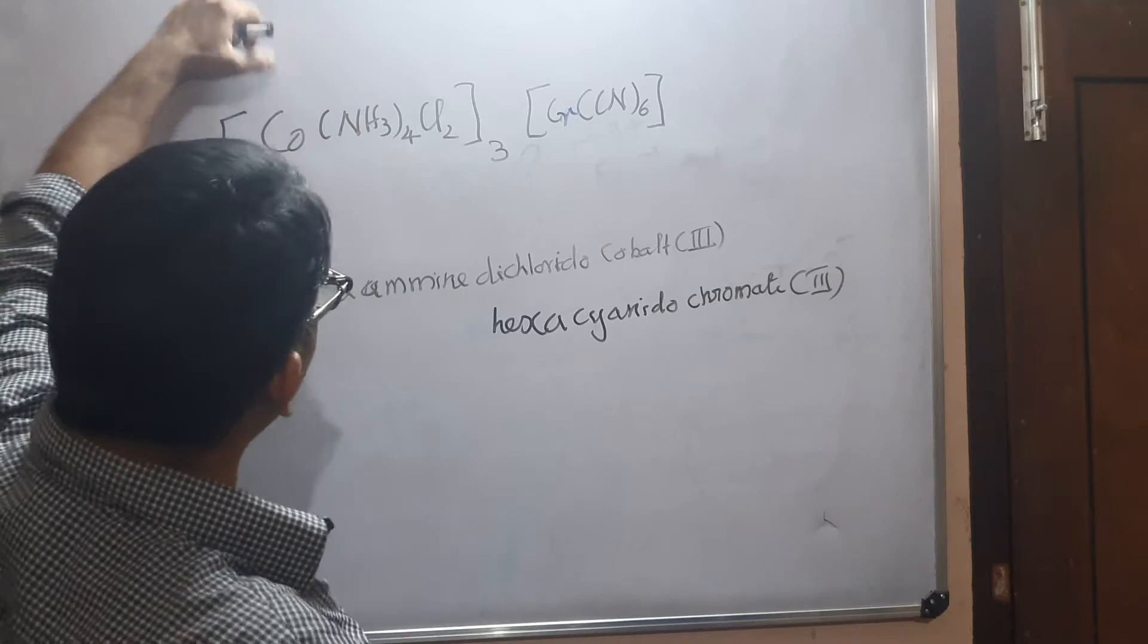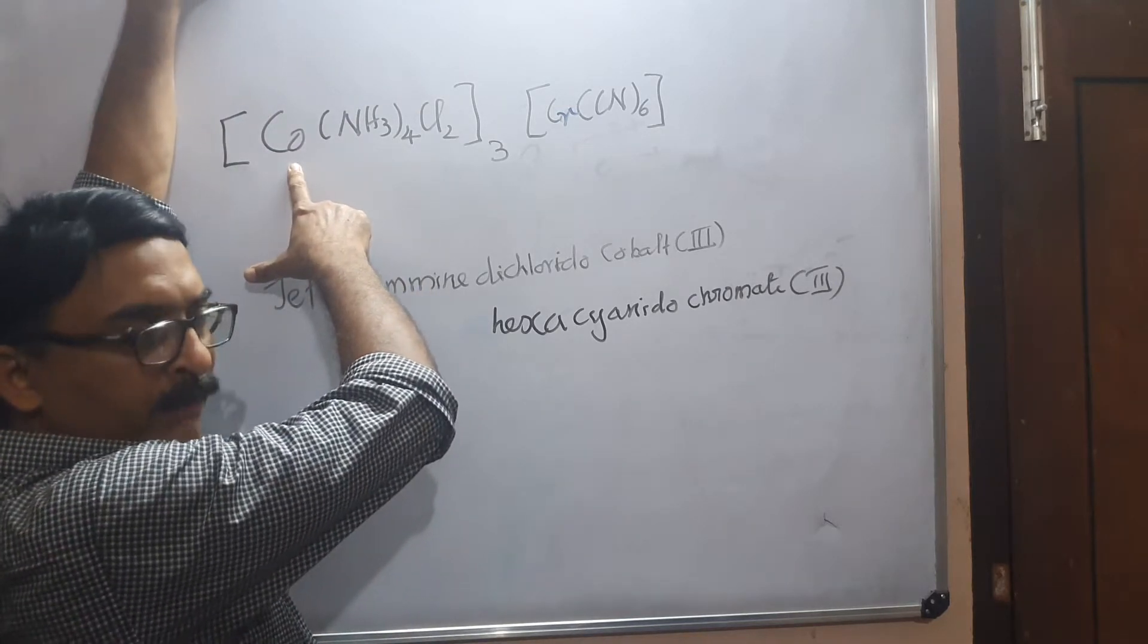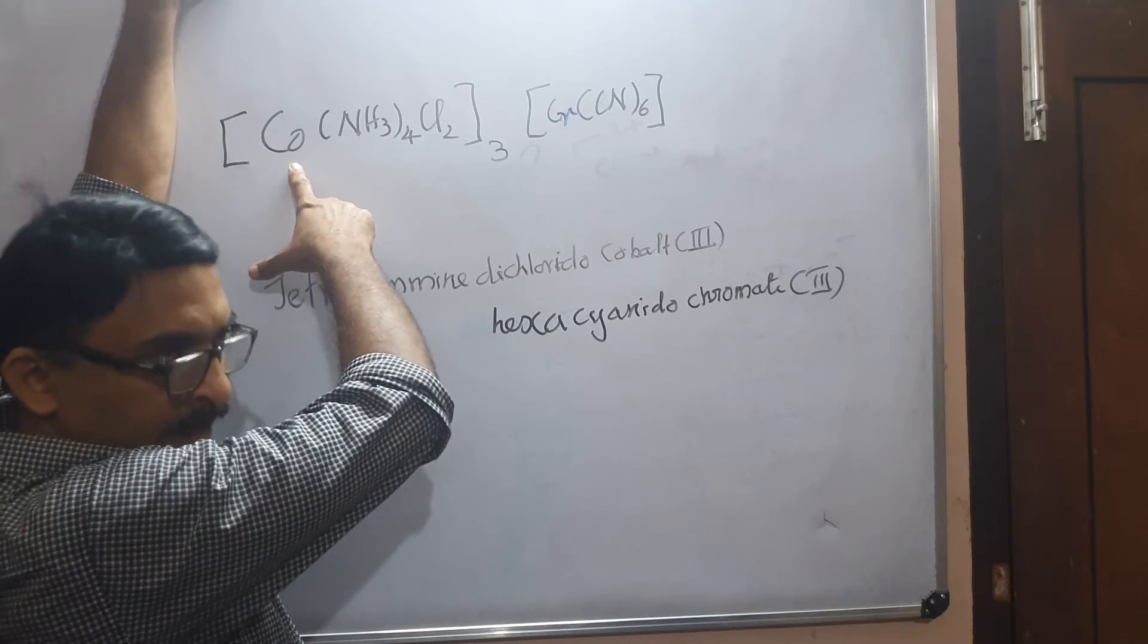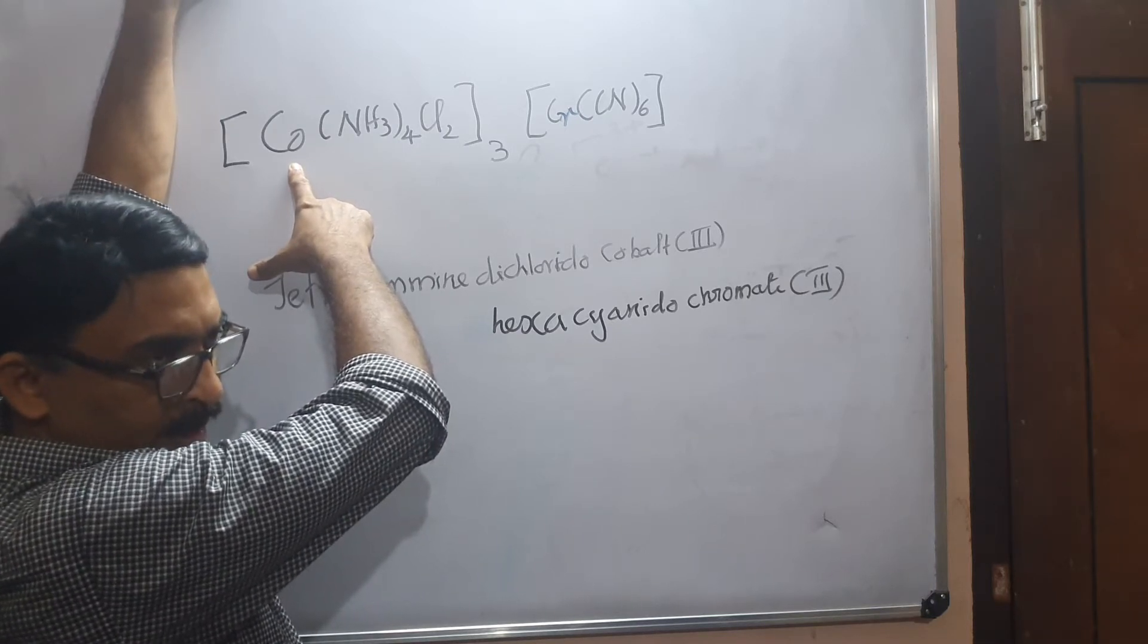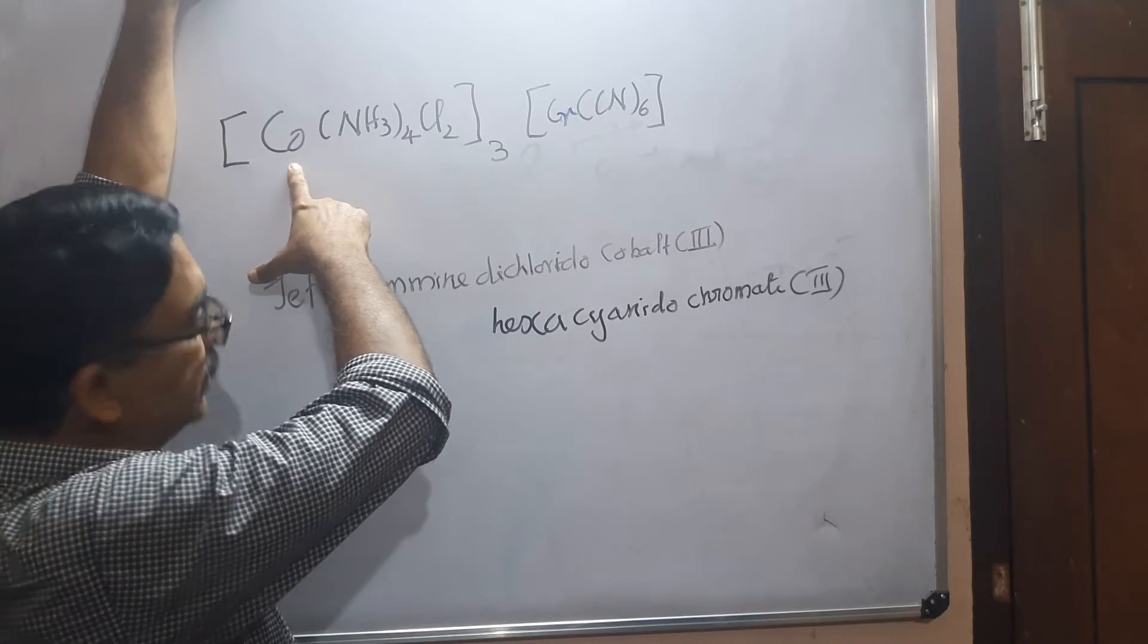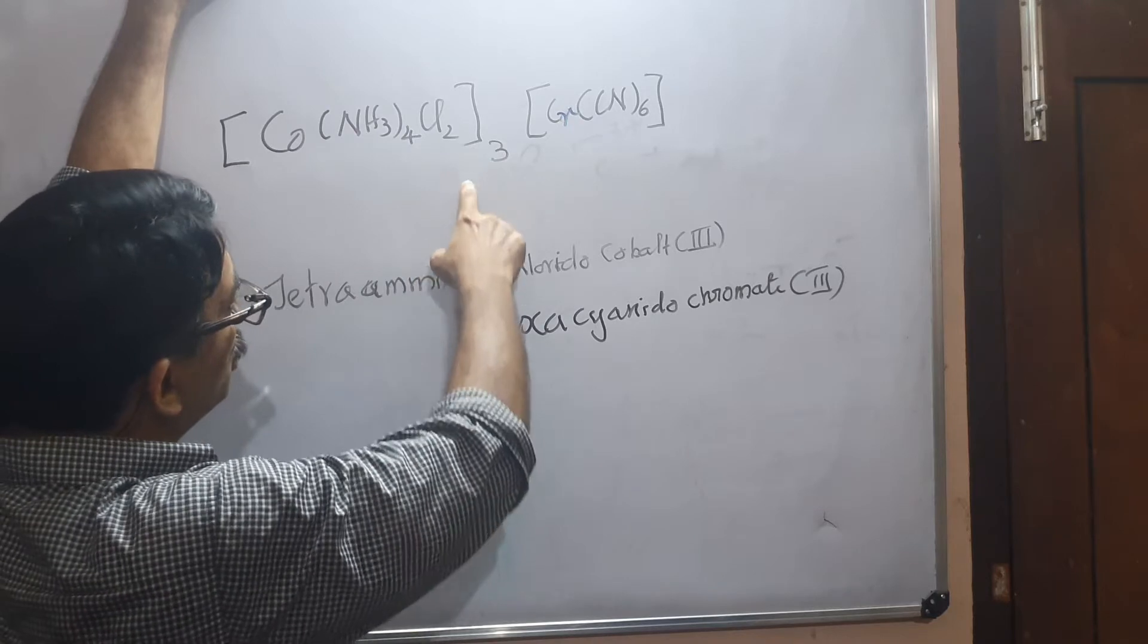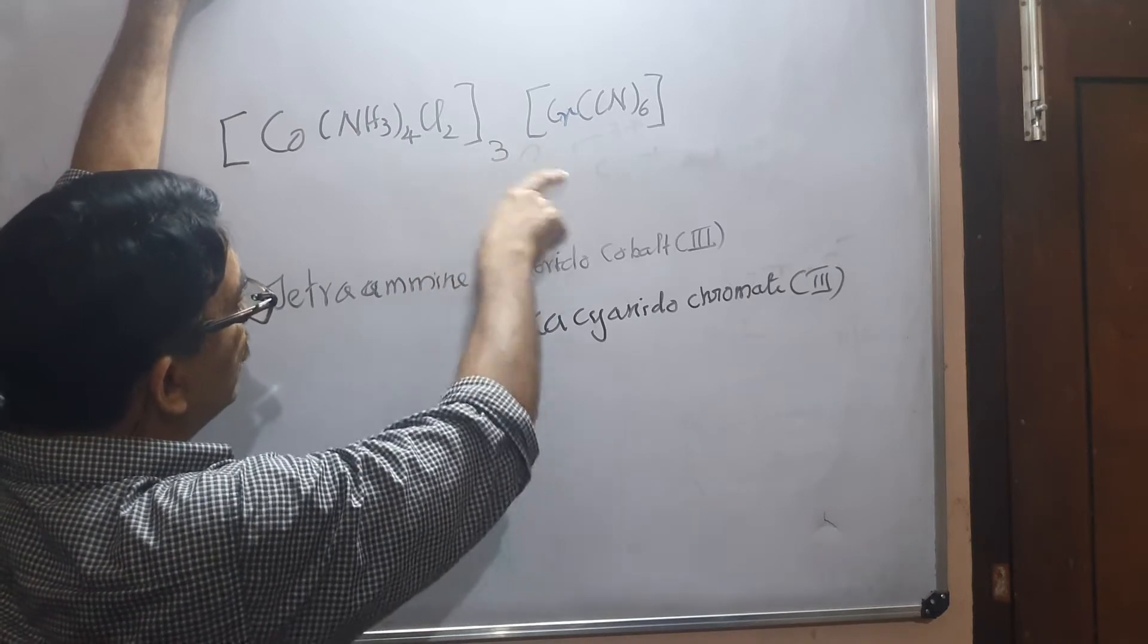Then express the name of the metal without any modification like cobalt, chromium, iron, silver, etc., never like chromate or argentate. It will end as cobalt and you have to show its oxidation state in Roman numerals.